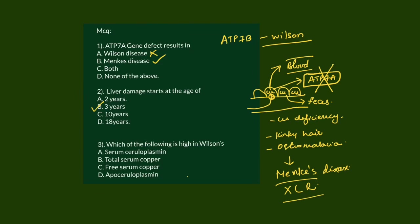MCQ 3: Which of the following is high in Wilson's disease? Serum ceruloplasmin — decreased. Total serum copper — decreased, because ceruloplasmin decreases significantly. Free serum copper — increased. Apoceruloplasmin — although it doesn't combine with copper, it is relatively unstable and gets degraded easily, so its levels also decrease. The correct answer is increased free serum copper.